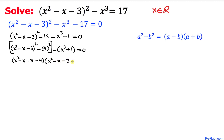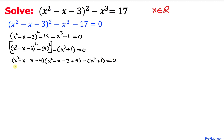And then we write the remaining part: negative x cubed plus 1, equal to 0. Let's go ahead and simplify — that gives us (x squared minus x minus 7) times (x squared minus x plus 1), and then minus x cubed plus 1, equal to 0.